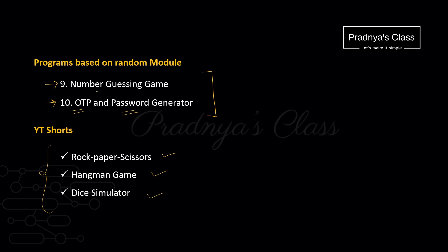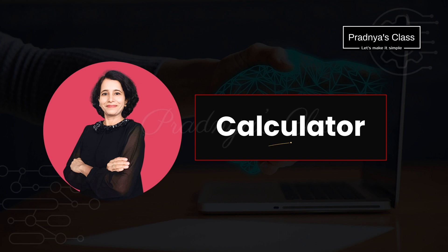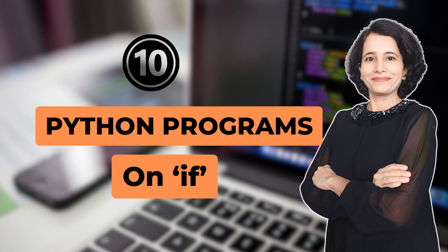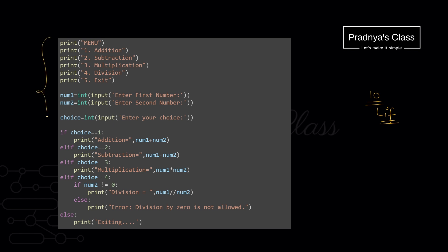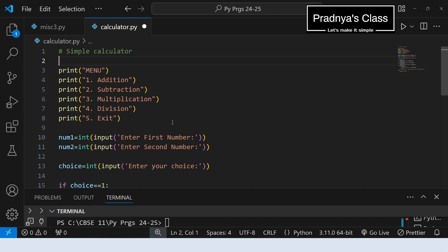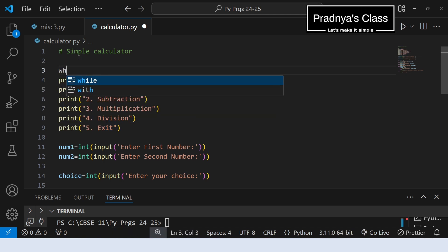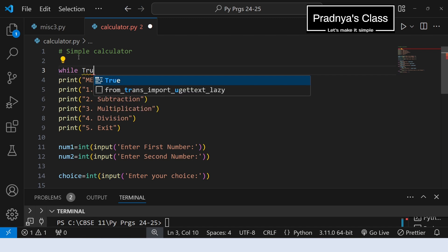Don't forget to check out all those videos. Now let's improve the calculator program — we discussed 10 programs based on conditional statement if, including a calculator. Now let's improve it: on screen the menu will always be displayed and you choose from it. We'll use while loop for that. This is our original program — we enclose the whole code inside while True to keep executing the menu. Let's change the indentation by selecting everything and pressing tab.